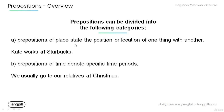A: Prepositions of place state the position or location of one thing with another. Have a look at the example below: Kate works at Starbucks. The preposition 'at' tells us where Kate works.